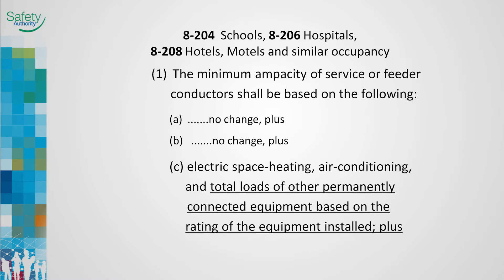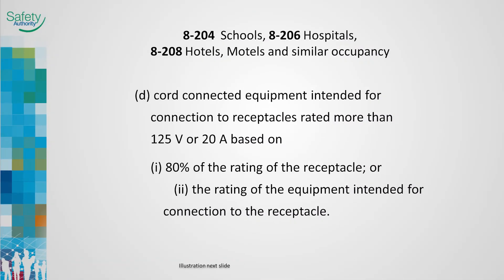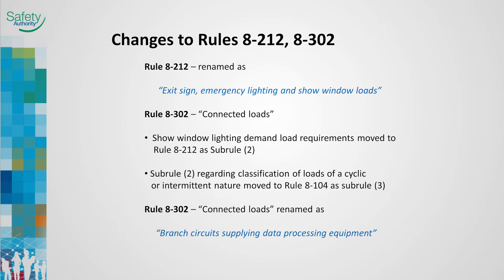Rule 8204, Schools; 8206, Hospitals; and 8208, Hotels, Motels and similar occupancies: the 2012 code wording in Item C, Power Loads, has been replaced with wording which includes more electrical equipment typically found in modern schools. Including these loads will result in a more accurate calculation when determining the minimum capacity for a service or feeder supplying loads in schools, hospitals and hotels and motels. Item D is also new and has been included to account for the large loads that cord-connected electrical equipment can add to an electrical system found in schools, hospitals, hotels and other similar occupancies. Only loads rated more than 125 volts or 20 amps must be included. These editorial changes were made to either group similar loads within the same rule or to group certain load classifications such as cyclic or intermittent within the same rule.